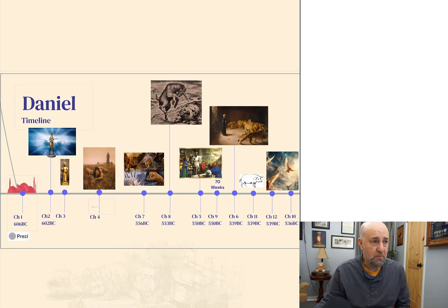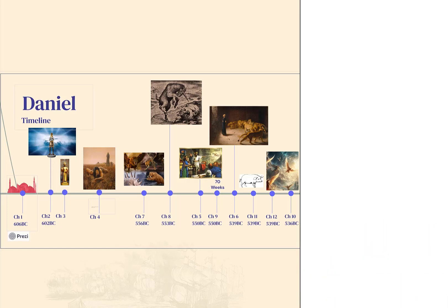What you see before you is a timeline of the chronological writings of the book of Daniel — and notice I said chronological, because this is not the order that we see the book of Daniel laid out. Notice that chapters 5, 6, and 10 in particular are way out of line.